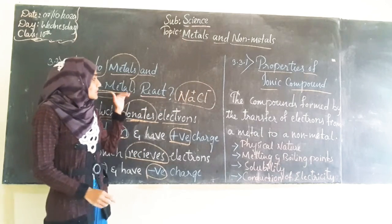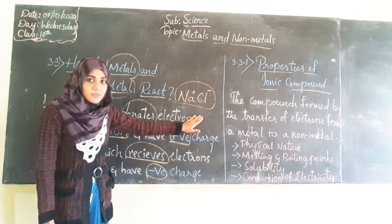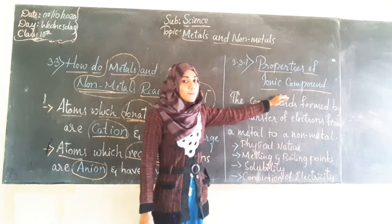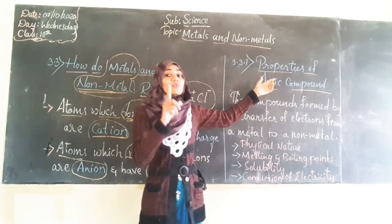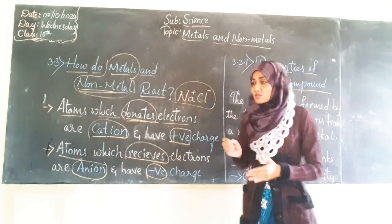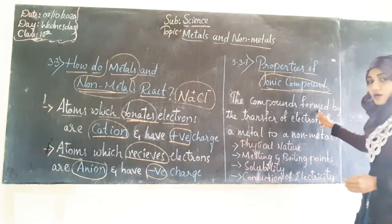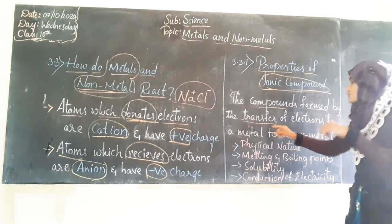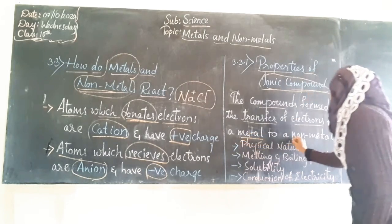Now we shall see the reaction of metals with non-metals and also the exchange of electrons between them. Around this, we shall come across one more concept: ionic compounds. Ionic compounds are compounds formed by the transfer of electrons from a metal to a non-metal.